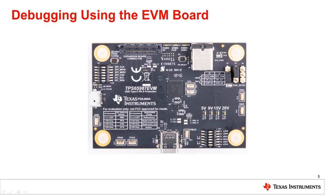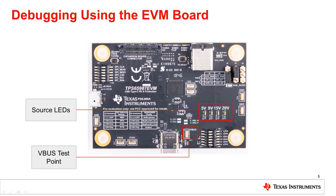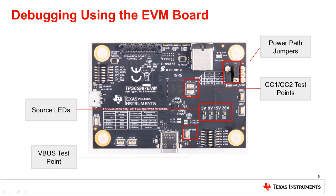The EVM has many features that are useful for debugging purposes. The source LEDs turn on when the EVM is sourcing 5, 9, 15, or 20 volts; they do not illuminate when the EVM is sinking power. The VBUS test point can be used to measure the voltage on VBUS. The power path jumper configuration is essential to the board functionality — the jumpers determine whether the switch paths are used for sinking or sourcing and need to match the device firmware. The CC1 and CC2 test points can be used to monitor the CC lines to see the PD contract negotiation taking place.